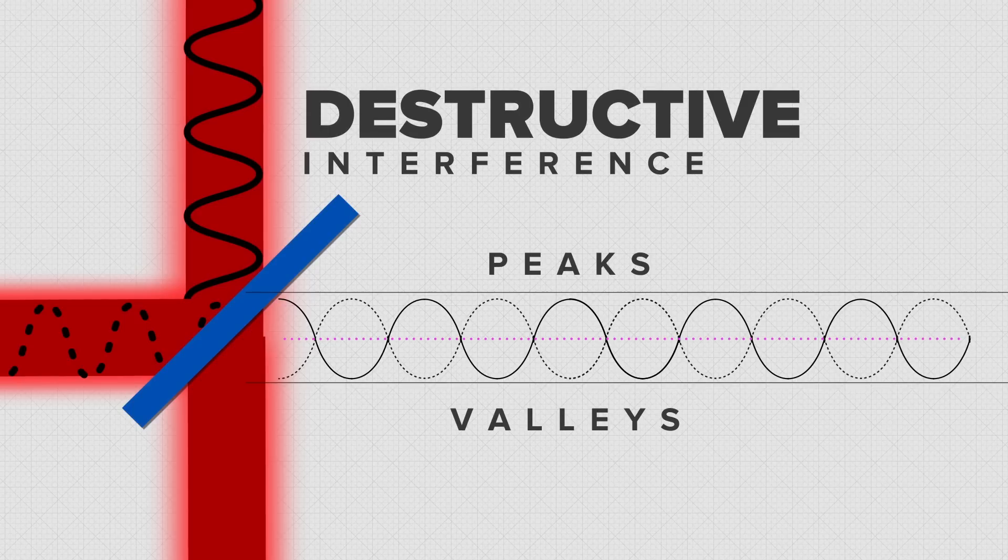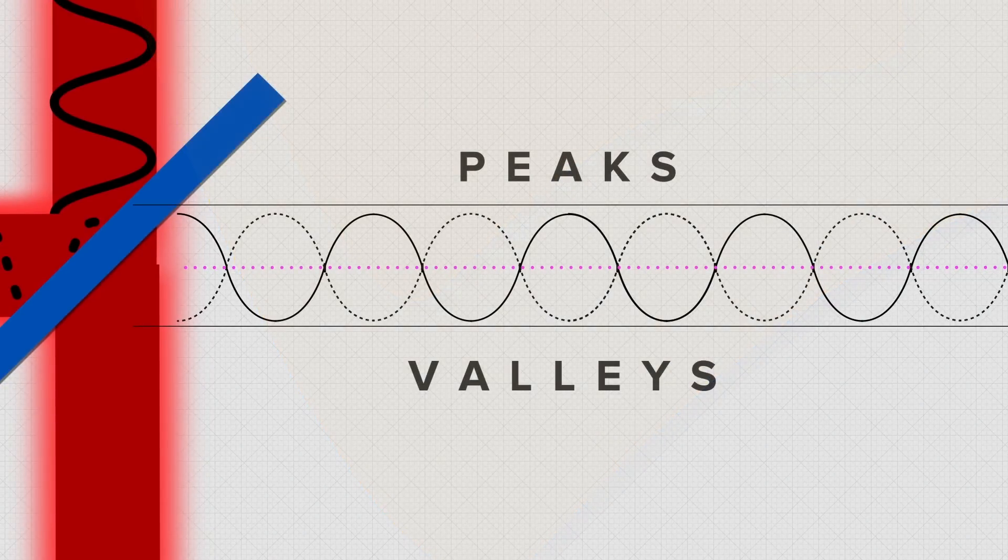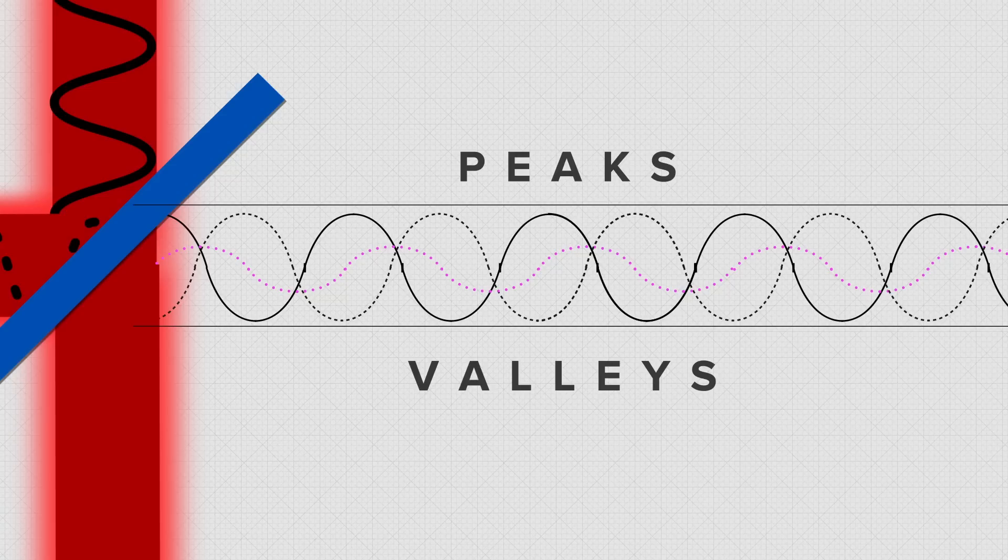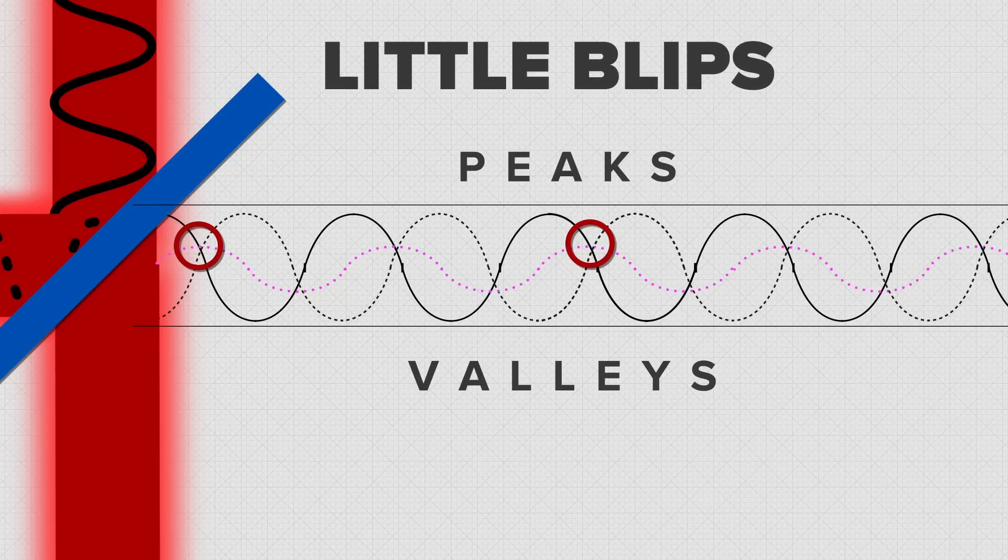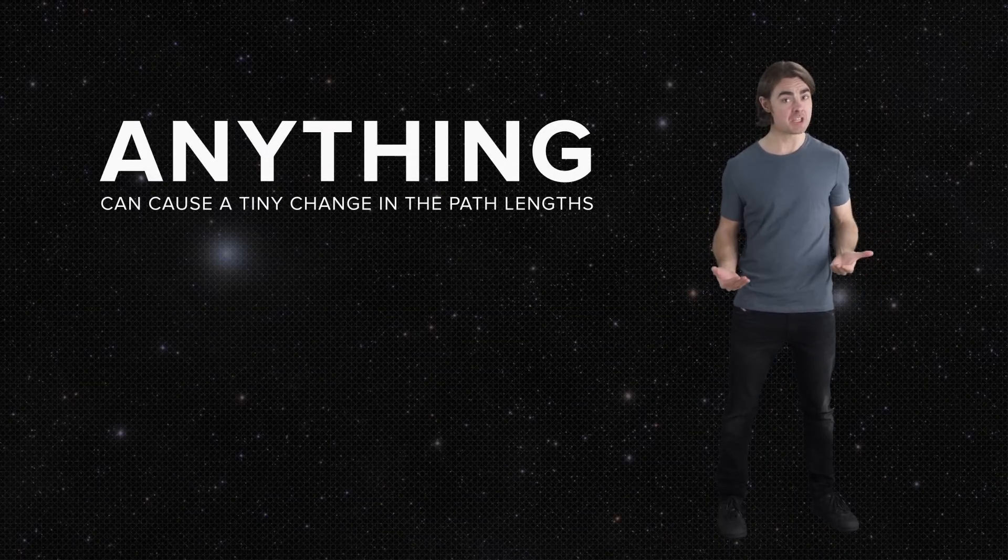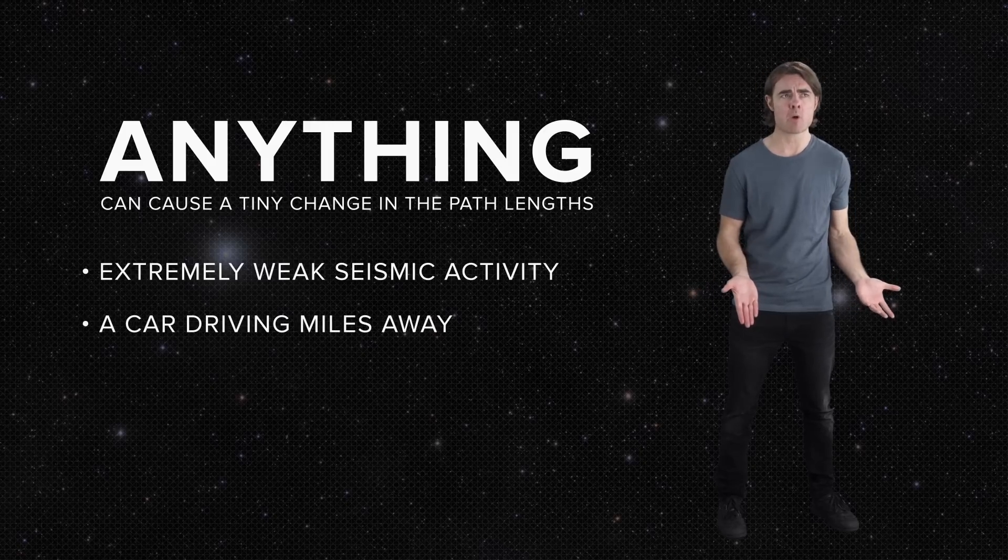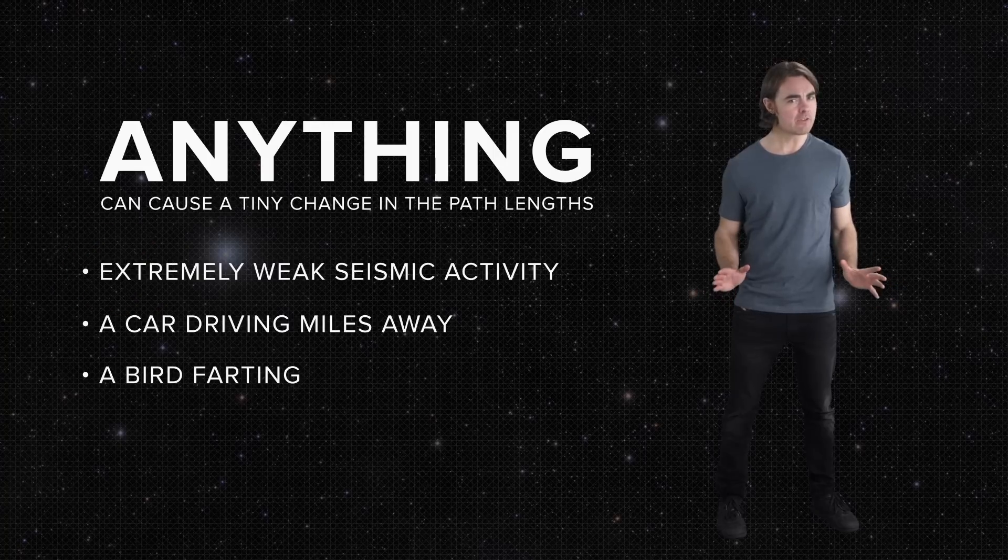But if a gravitational wave passes by, it'll shrink one of those paths and lengthen the other, and then vice versa, oscillating with time. The returning beam won't cancel out perfectly, and you'll get these little blips of signal. The original LIGO was able to spot changes in the length of its four kilometer arms of around 1 1,000th of the diameter of a proton. Nice. Except for the fact that anything can cause such tiny changes in path lengths: extremely weak seismic activity, a car driving miles away, a bird farting nearby. Even quantum fluctuations in the photon rate causes noise.